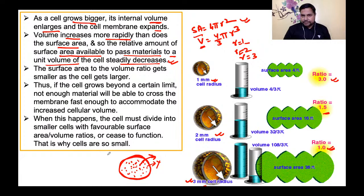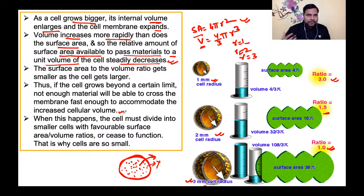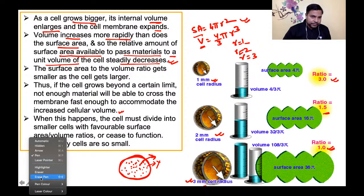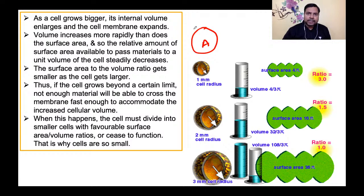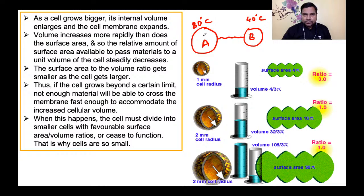उदाहरण के लिए, अभी बाहर का temperature लगभग 11-12 degree Celsius है, लेकिन हमारा internal body temperature constant और higher है। Physics में zeroth law of thermodynamics के अनुसार, अगर body A higher temperature (80°C) पर है और body B lower temperature (40°C) पर है, तो दोनों को conducting medium से जोड़ने पर heat higher से lower temperature की ओर flow करेगी जब तक दोनों का temperature बराबर न हो जाए।